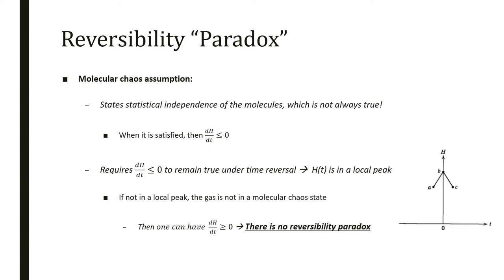The answer is in the molecular chaos assumption. It states that molecules are statistically independent from each other, and this is not always true. Actually, after they collide, particles are highly correlated with the velocities. So what is Boltzmann's theory actually saying? It says that when molecular chaos is satisfied, then dH/dt is lower than or equal to zero. If it is satisfied, then H has to be in a local peak.